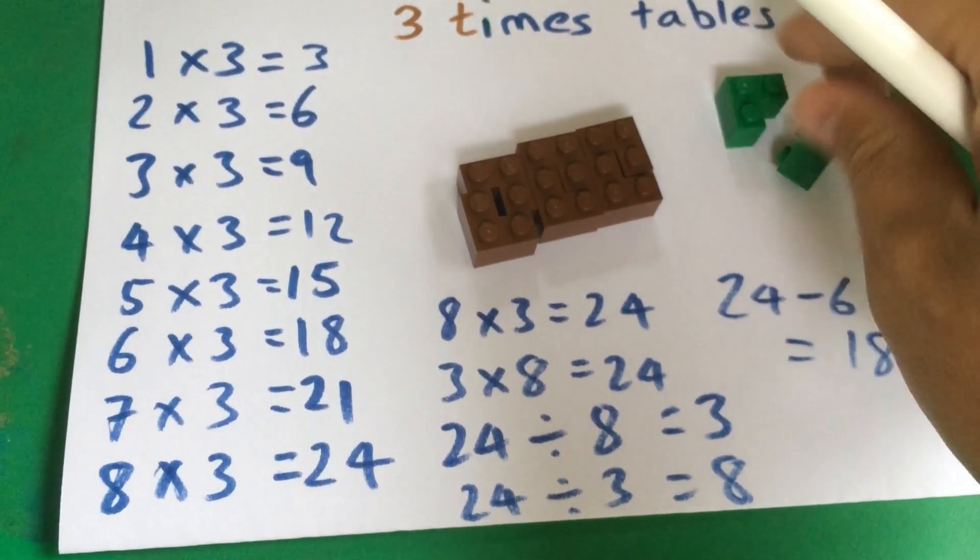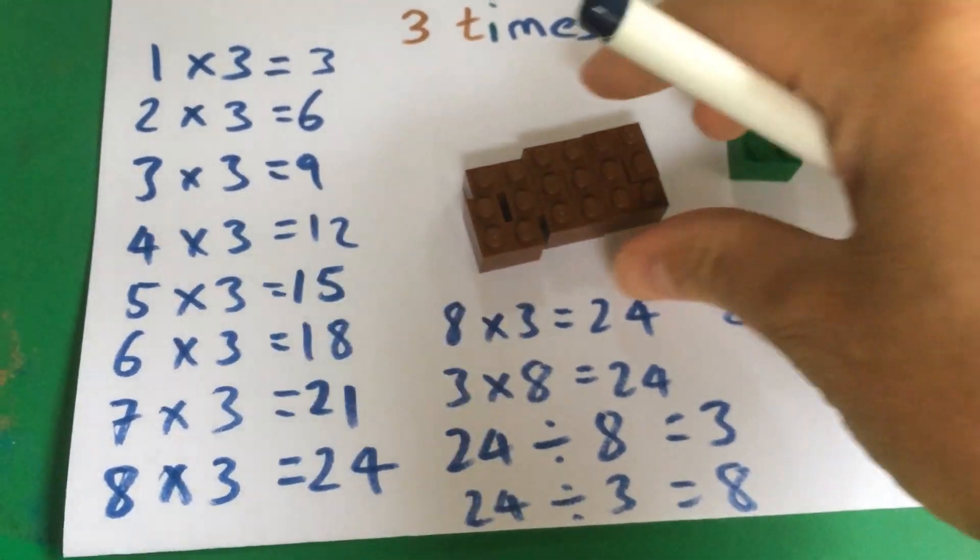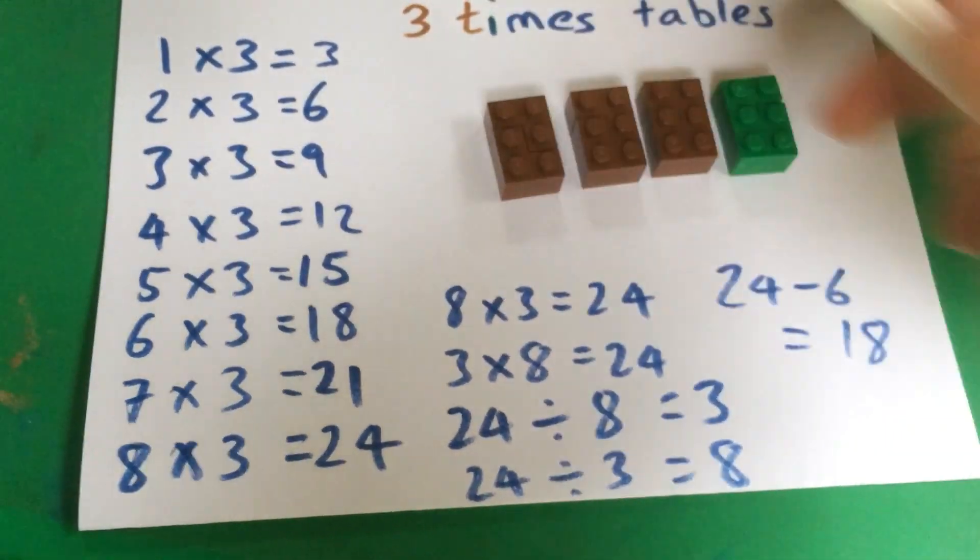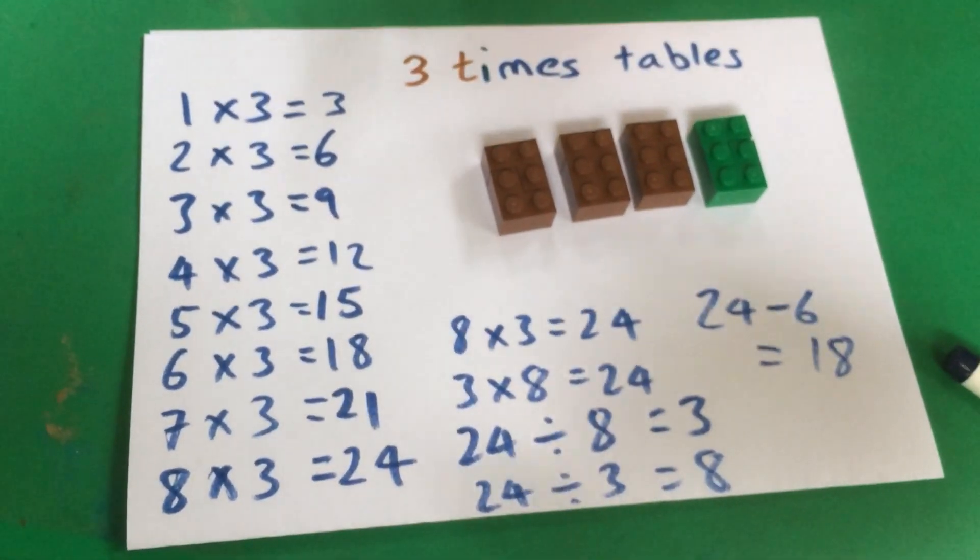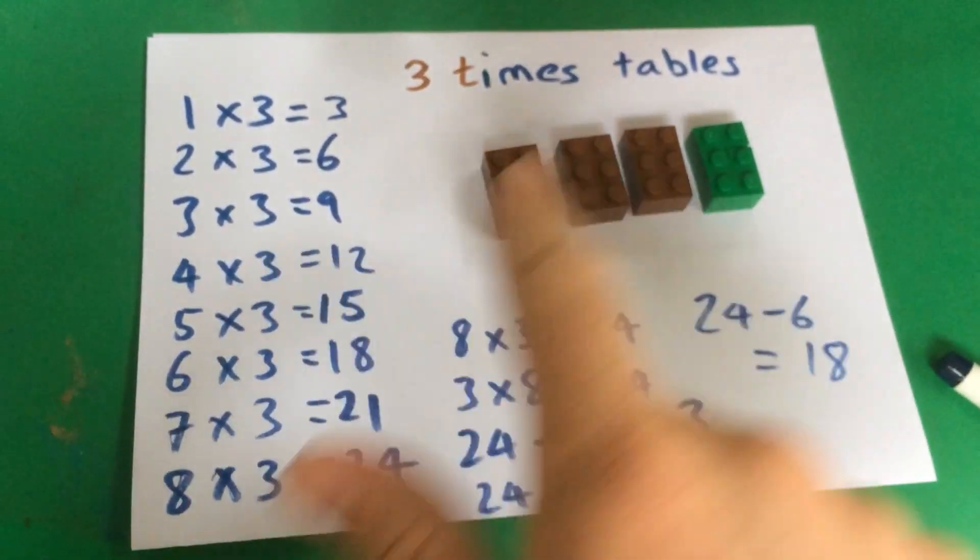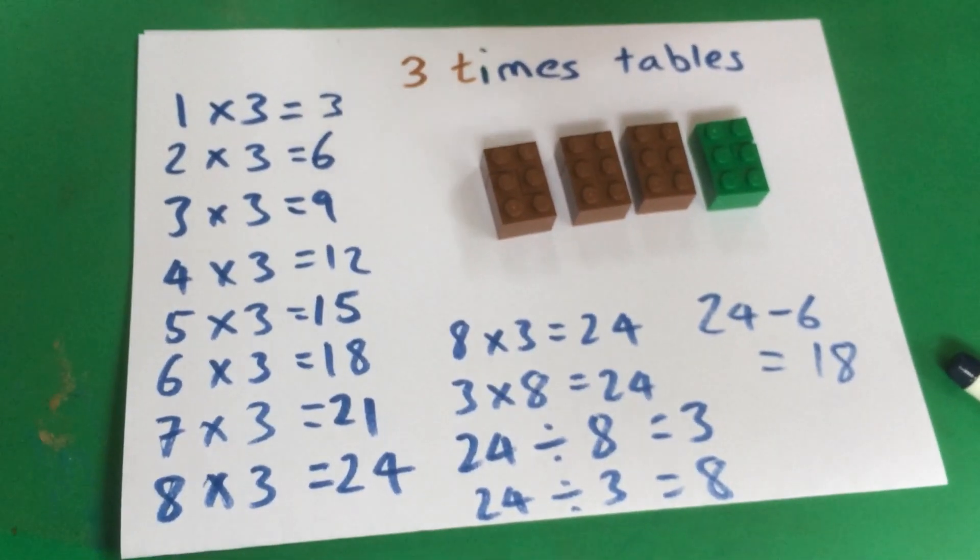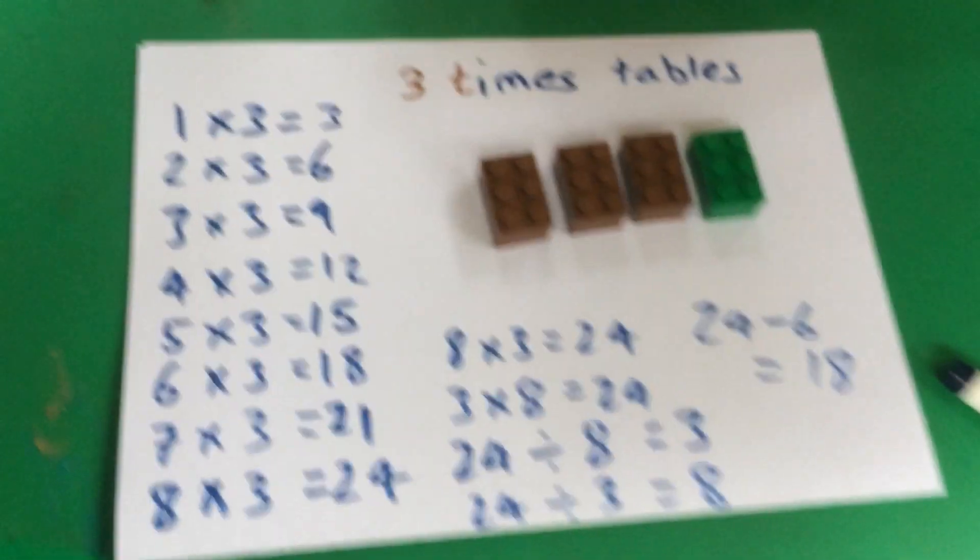Or that could be the 6 times table, where you're doing 6, 12, 18, 24. But there we go. A little bit of multiplying and dividing, a bit of adding, subtracting, and the 3 times table. Thanks for watching. Don't forget to like, subscribe, and share. Goodbye.